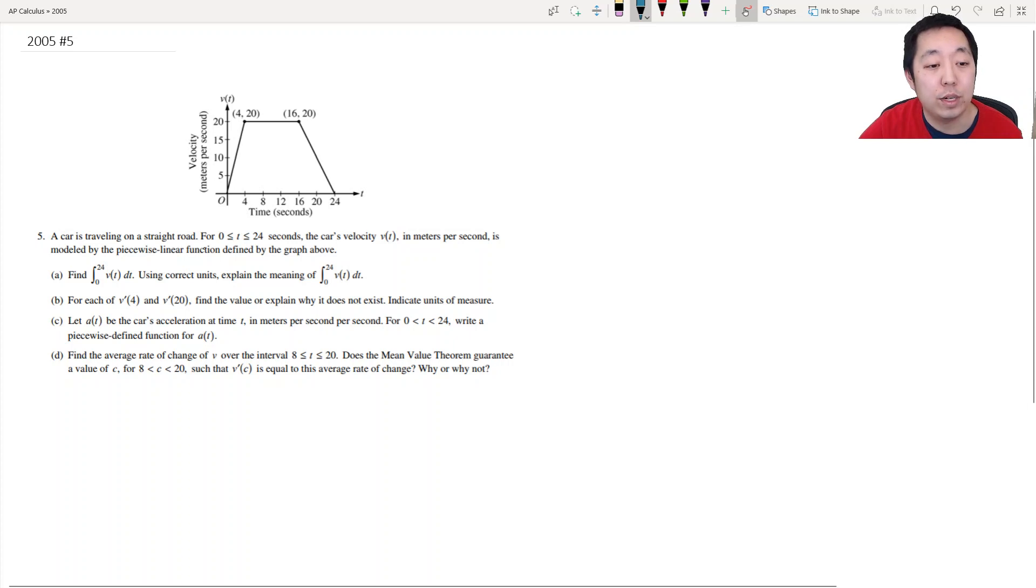A car is traveling on a straight road for zero less than or equal to t less than or equal to 24 seconds. The car's velocity v of t, in meters per second, is modeled by the piecewise linear function by the graph above. Find the integral of v of t using correct units to explain the meaning of this.